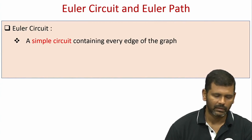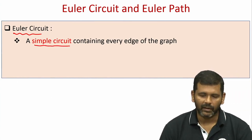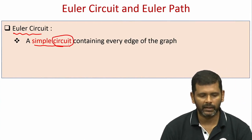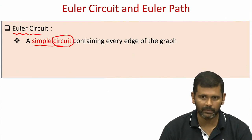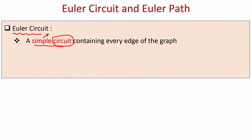Imagine you are given a graph. An Euler circuit is a simple circuit which contains every edge of the graph. Since it is a circuit, the starting point and end point of the trail or tour will be the same — you start and end at the same vertex. It is simple in the sense that edges are not allowed to be repeated. It contains every edge of the graph; no edge will be absent. If such a simple circuit exists it is called an Euler circuit, and a graph containing an Euler circuit is called an Eulerian graph.